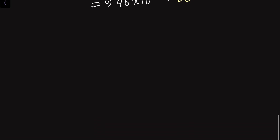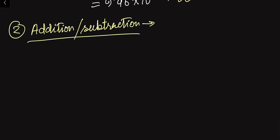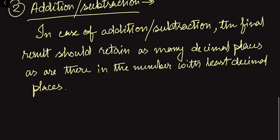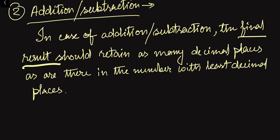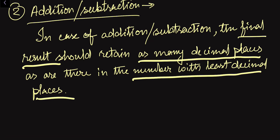Now let us go to the second rule: addition or subtraction. In case of addition and subtraction, the final result should retain as many decimal places as there are in the number with the least decimal places among the various numbers on which we are doing the operation. We have to find the number with the least digits after the decimal point and write the answer up to that many decimal places.